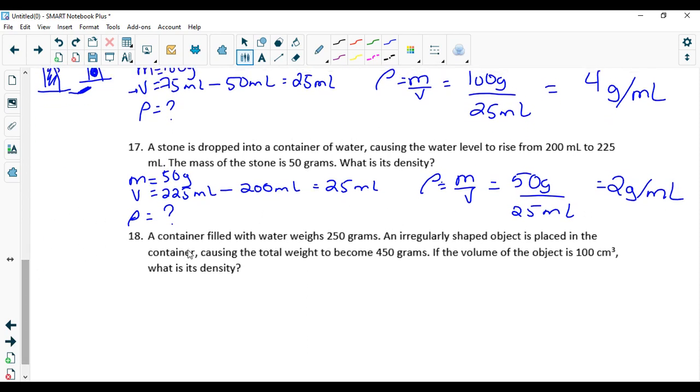And last but not least, a container filled with water weighs 250 grams. An irregular shaped object is placed in the container causing the total weight to become 450 grams. If the volume of the object is 100, what is the density? So we just did things a little differently this time. We have to find the difference in mass, not in volume.